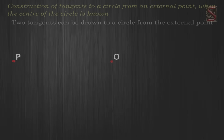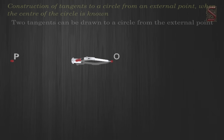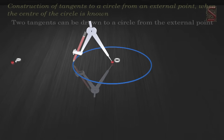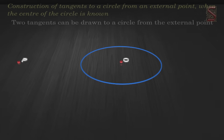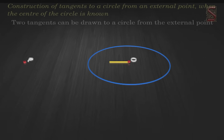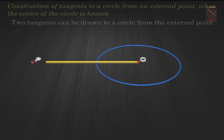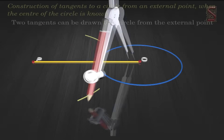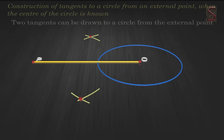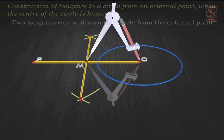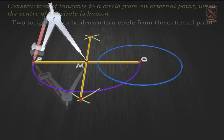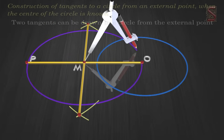Given a circle with center O and a point P outside it, we have to construct the two tangents from P to the circle. Step 1: Join the center O and the point P outside the circle. Step 2: Let M be the midpoint of OP.